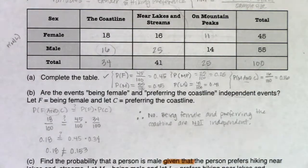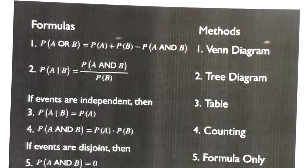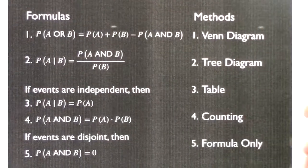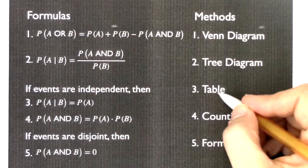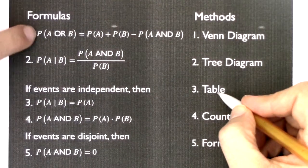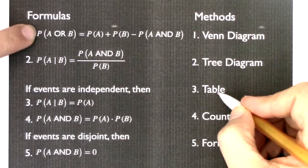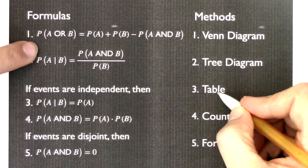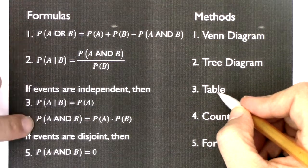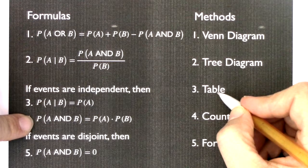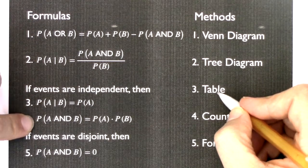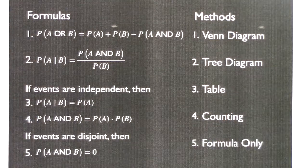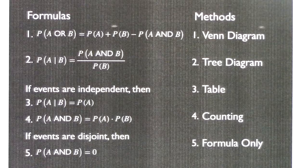Summarizing what we've done in this problem: we used the table method and looked at formula 1 for OR, formula 2 for conditional probability, and formula 4 for independence.